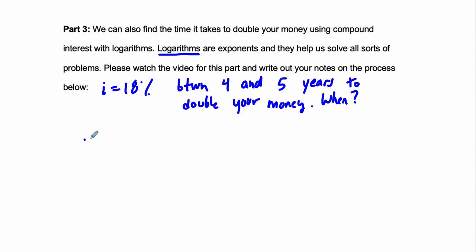Supposing you start with some amount of money, we'll say it's $100, it doesn't really matter, you'll see why in a moment. And you're adding 18% to it, so it's 1 plus 0.18, and you're doing that for some amount of years t, and you want it to equal double 100. You want to double your money.